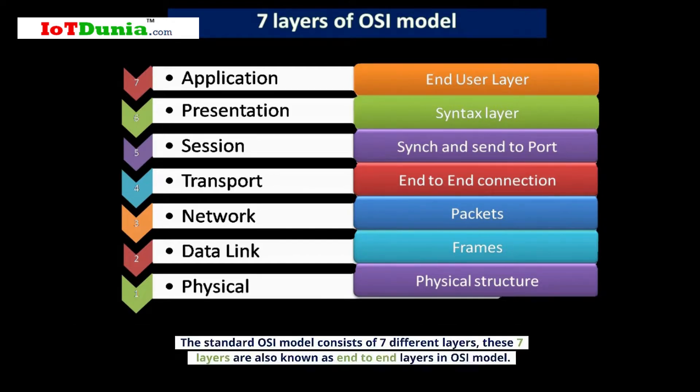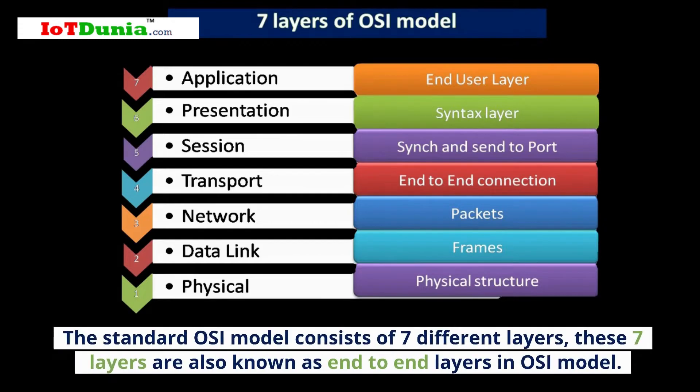The standard OSI model consists of seven different layers. These seven layers are also known as end-to-end layers in the OSI model.